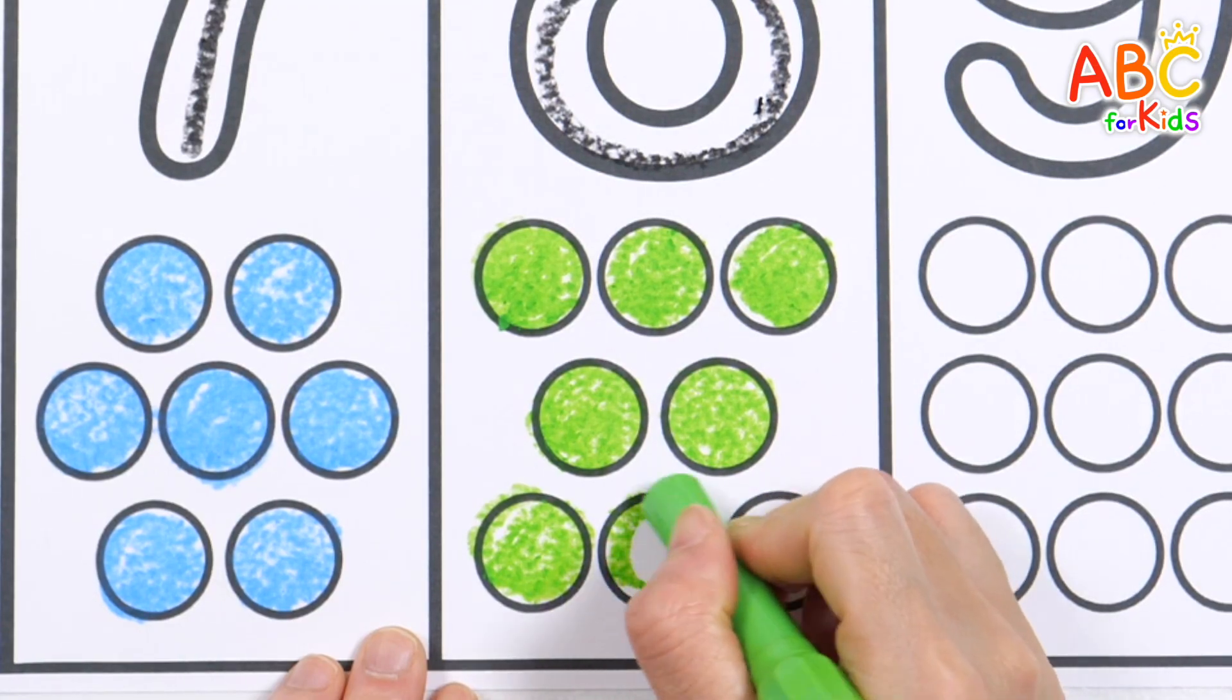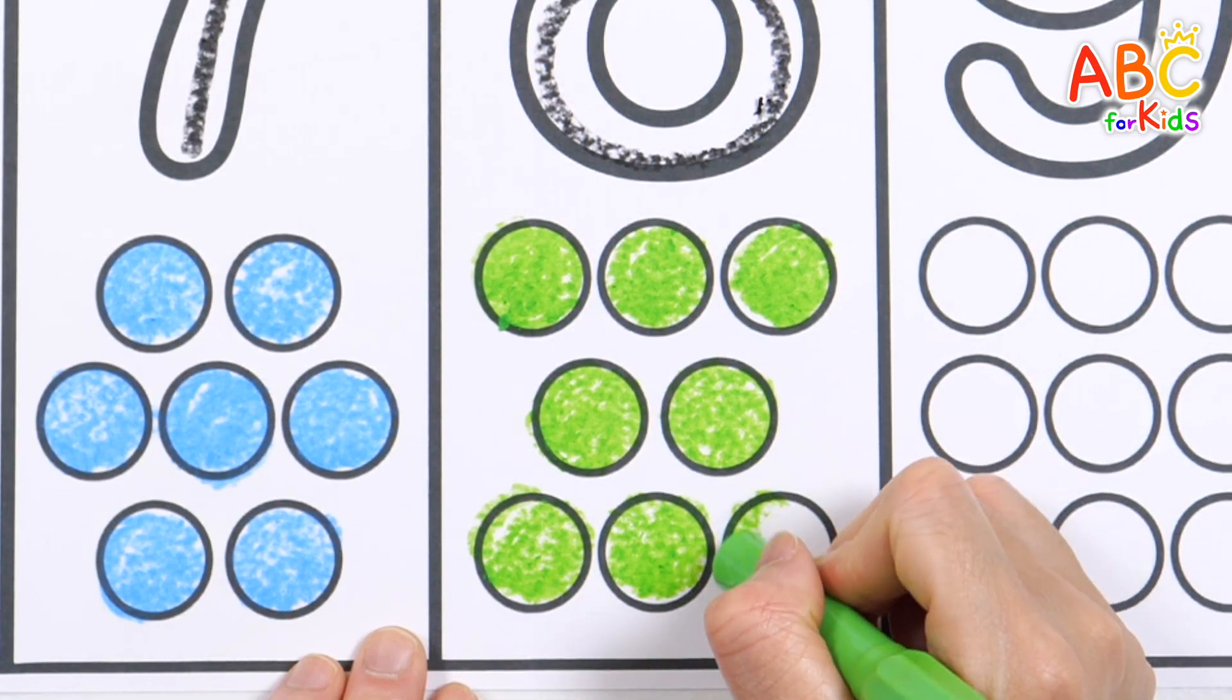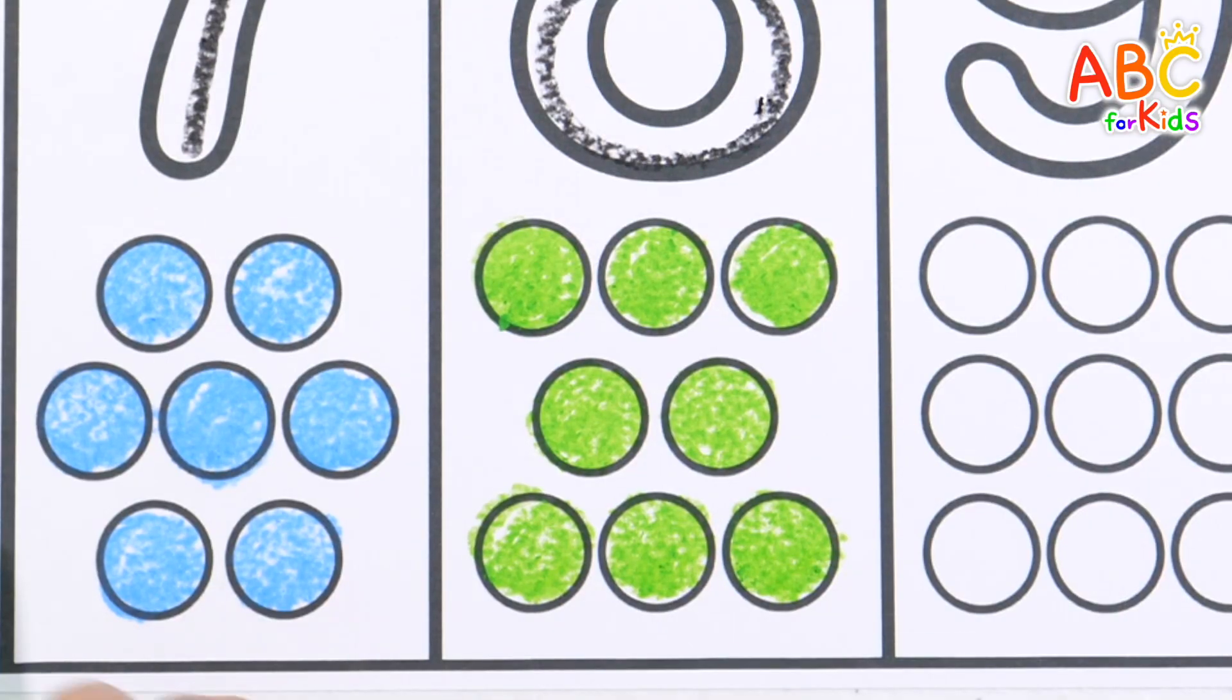E is for egg. Six. Crack it, cook it, break the bun. Seven. Sunny side up or on a bun. Eight.